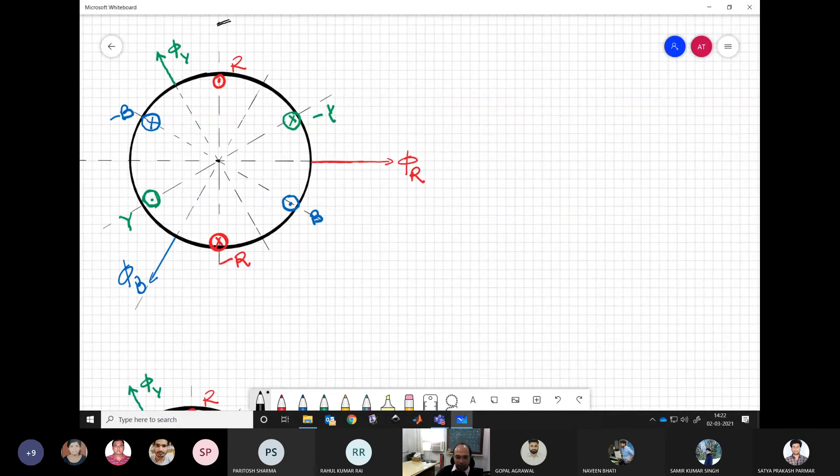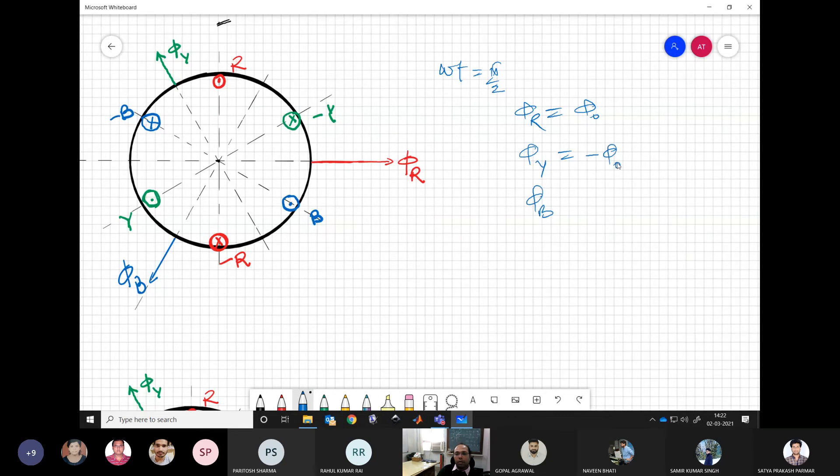Again, now if we take the instant omega t equal to pi by 2, what we have basically: phi r is having the maximum value phi naught, and phi y and phi b, these both are minus phi naught by 2 and minus phi naught by 2. So this is the value.